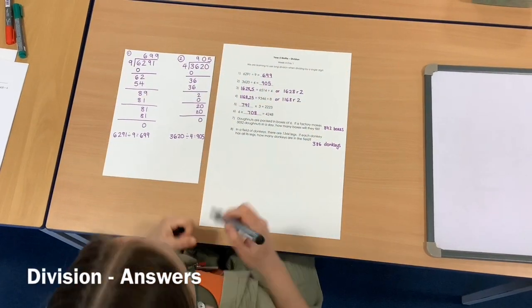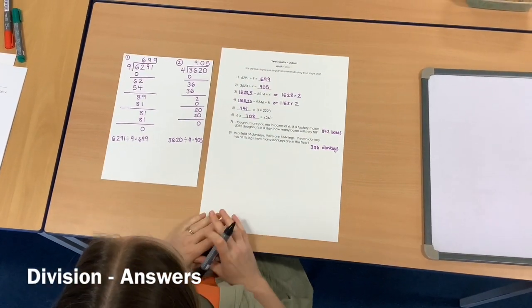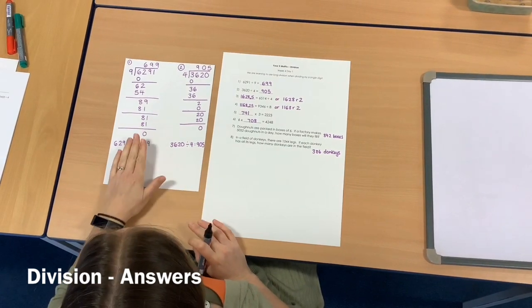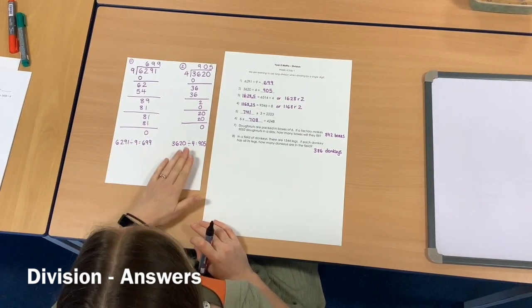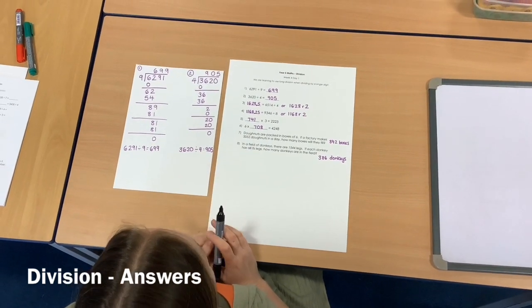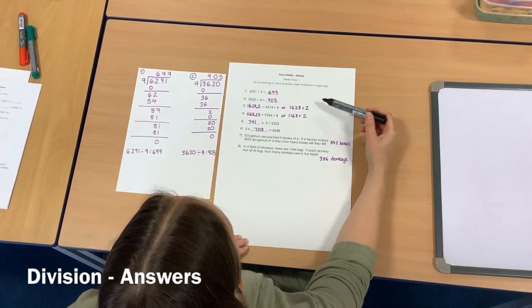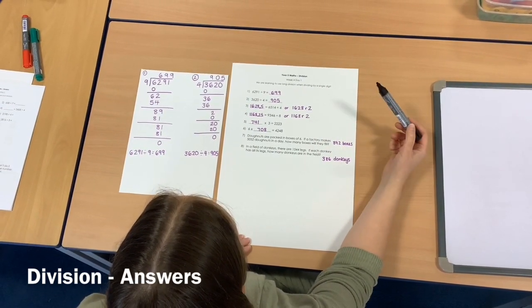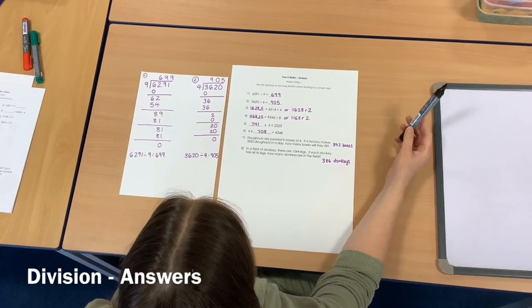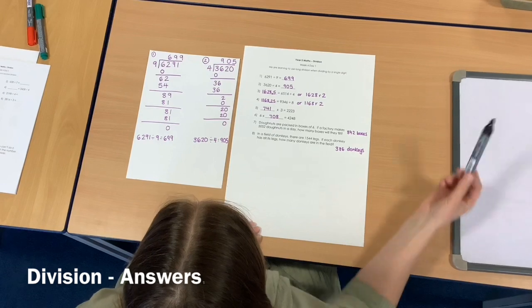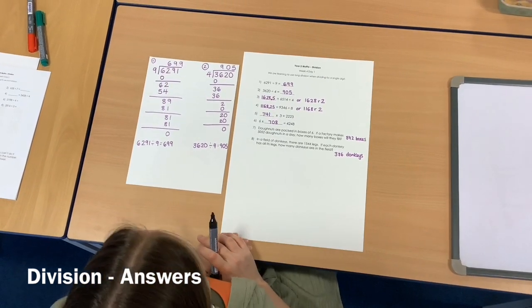Good morning, Year 5, and welcome back for more division. First of all, I've got the answers to yesterday's task. I've done the workings out for one and two for you, and then written the rest of the answers in. For number three and number four, I've given you the answer both as a decimal and a remainder. For this week's work, we're okay just to have the remainder answer, but if you wanted to do it as a decimal, I put it there so you can check your working.